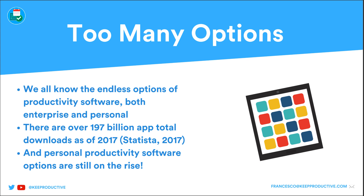Let's start with this slide: too many options. We all know from being in the productivity space that there are hundreds of thousands of apps - you could be scrolling the app store for absolutely days and still find applications you've never heard of. There are endless options in both the enterprise and personal space, hundreds of Evernote-like apps and hundreds of project managers. There have been 197 billion app downloads as of 2017, and that figure has likely soared since.